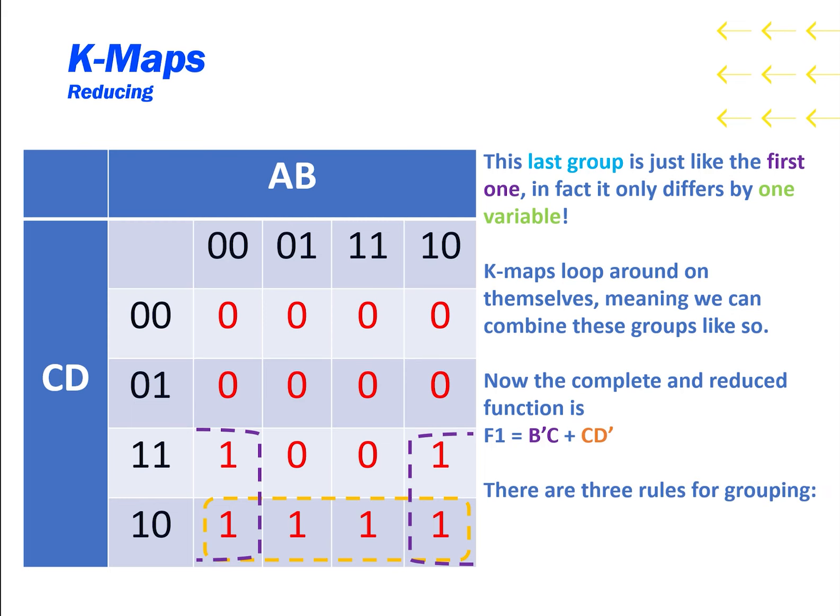When grouping on a K-map, you need to remember these three rules. The group must be rectangular, the group must contain the same output, and the group must contain an area equal to a power of 2.